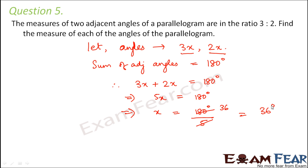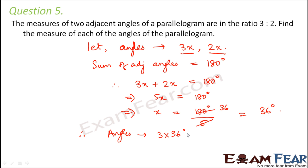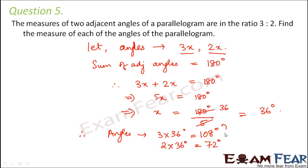So x is equal to 36 degrees. Therefore, the angles would be 3×36 degrees which is equal to 108 degrees, and the other angle would be 2×36 degrees, that is 72 degrees. Therefore, the angles would be 72 degrees and 108 degrees.